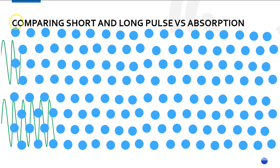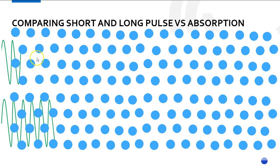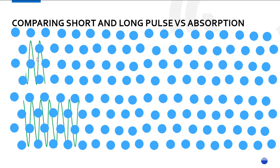In the upper one, there are basically two cycles of energy. In the lower one, there are five cycles of energy. This is a longer pulse — it's got more cycles and more energy. This is a shorter pulse — it's got less cycles and less energy. Let's look at what happens as these pulses start to go through the atmosphere.